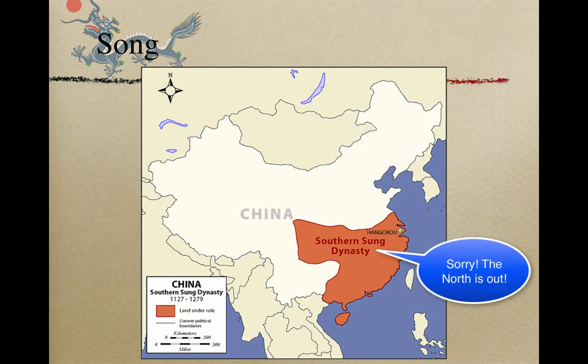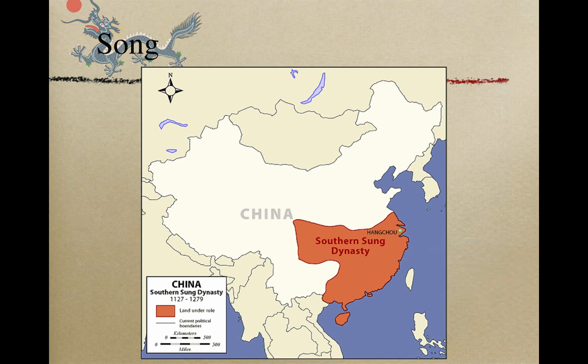In addition, the southern merchants became very wealthy because northern products like wheat and millet were no longer available, making southern rice crops extremely valuable.